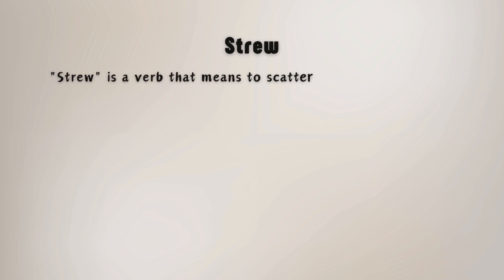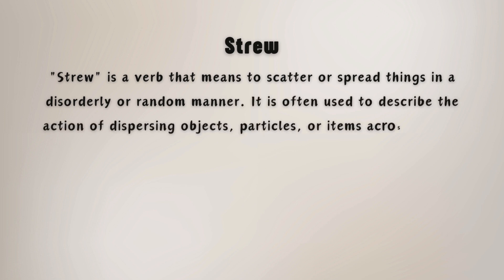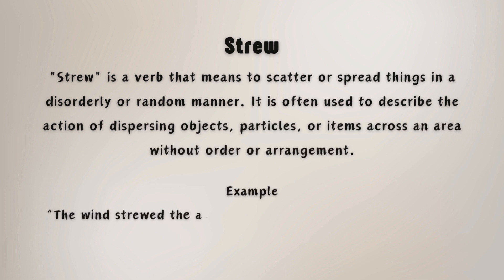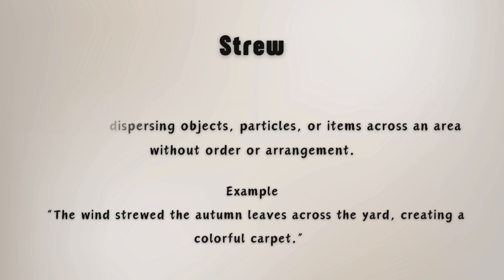Strew is a verb that means to scatter or spread things in a disorderly or random manner. It is often used to describe the action of dispersing objects, particles, or items across an area without order or arrangement. For example, the wind strewed the autumn leaves across the yard, creating a colorful carpet.